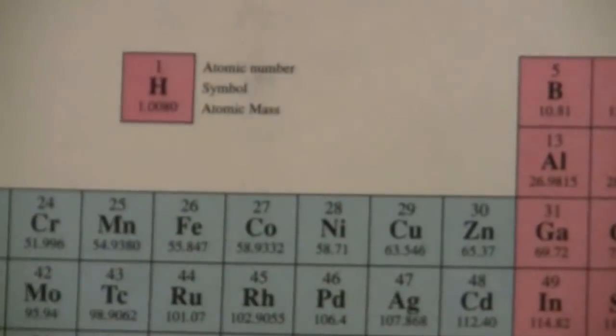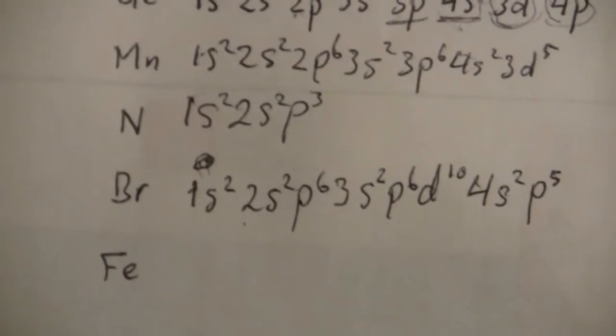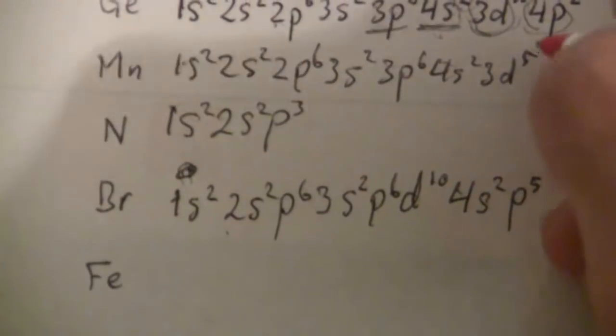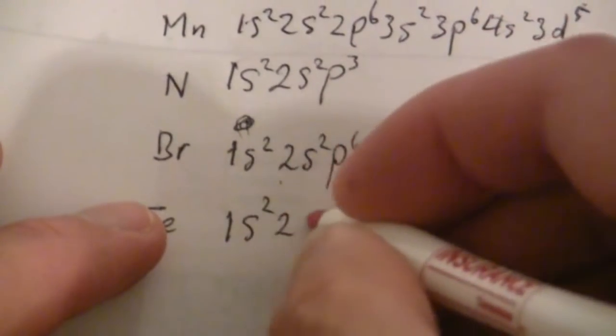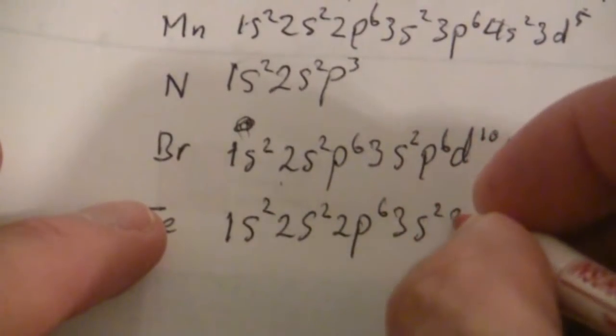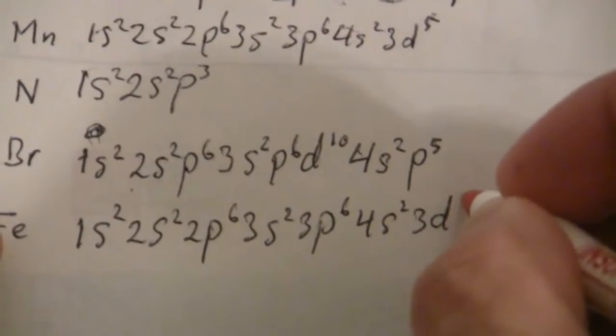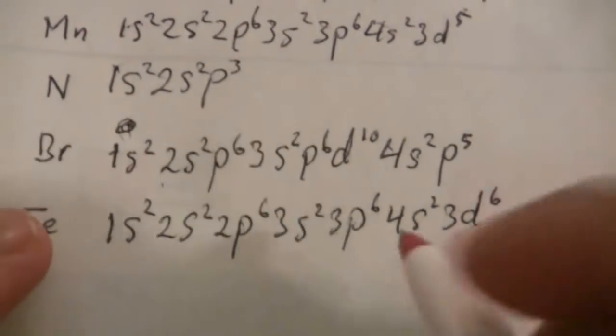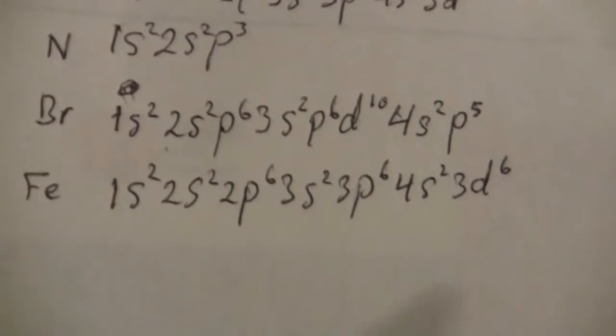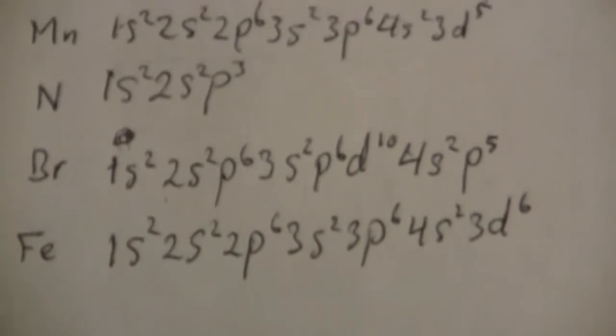And then for iron, Fe, here it is, right after manganese. So, it's going to look just like manganese, except 3d6. You'd have a 6 there. I'll go ahead and write it out just for the sake of it. 1s2, 2s2, 2p6, 3s2, 3p6, 4s2, and then this would be 3d6. And again, we can combine them like I did there. But this is the way I normally do it, so I'm in the habit of doing that, and I'll just stick with that for that one.